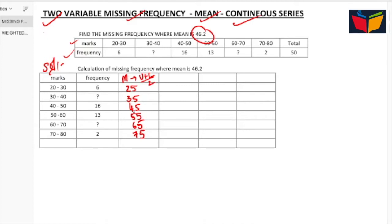So the first step is calculating the mid value. Next is D, for that we need to subtract mid values minus A, which is what we are assuming. You can assume any number here, but I always consider the smallest value in mid value for easy calculation. So 25, 35 minus 25 is 0, 35 minus 25 is 10, 45 minus 25 is 20, and so on: 30, 40, 50.